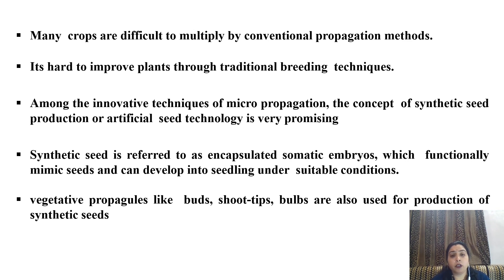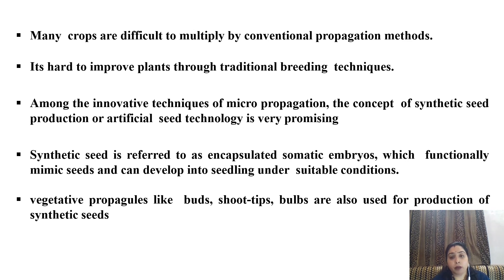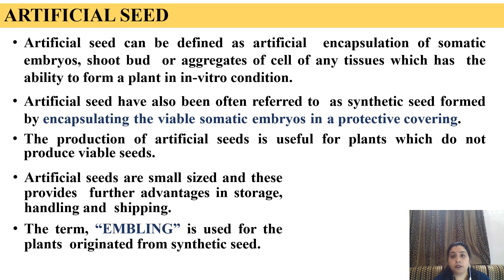Among the innovative techniques of micropropagation, the concept of artificial seed technology is very promising and giving very good results. Synthetic seed is referred to as encapsulated somatic embryos which are functionally similar to natural seeds and can develop into seedlings if they are provided suitable conditions. Vegetative propagules like buds, shoot tips, and bulbs are also used for production of synthetic seeds. Artificial seed can be defined as artificial encapsulation of somatic embryos, shoot buds, or aggregates of cells of any tissues, which has the ability to form a plant in in vitro condition.